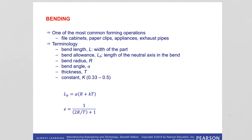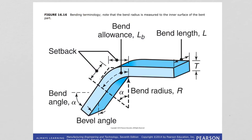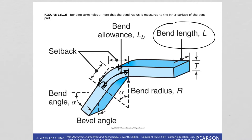Let's look at some terminology used in bending. Bend length is the width of the part. Bend allowance is the length of the neutral axis in the bend. Remember what neutral axis is: when you bend the material, the outer part is going to be under tension and the inner regions are going to be under compression. In between is a region we call the neutral region where the effects of tension and compression eliminate each other — there is no compression or tension somewhere in between.